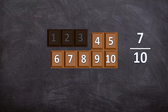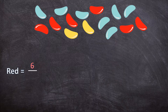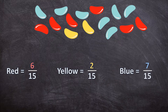Now let's look at one other example. Here we have 15 jelly beans. What fraction of these jelly beans are red? There are one, two, three, four, five, six red jelly beans — so six out of the 15 jelly beans are red. Now if I ask how many are blue, there are one, two, three, four, five, six, seven jelly beans that are blue — so seven out of the 15 are blue.